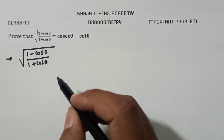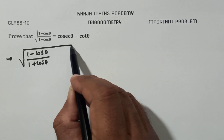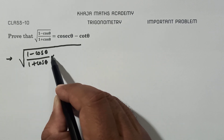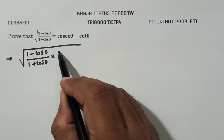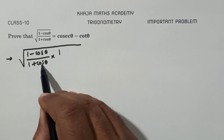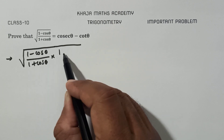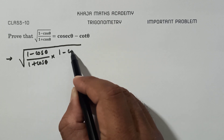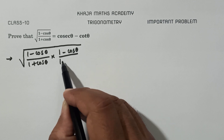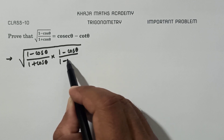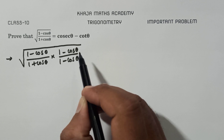Most of the time whenever you get a root, rationalize the denominator. Here in the denominator it is 1 + cosθ, so multiply by (1 - cosθ)/(1 - cosθ).